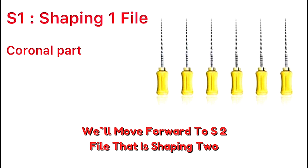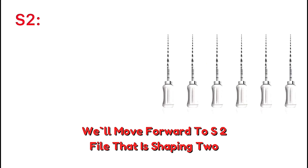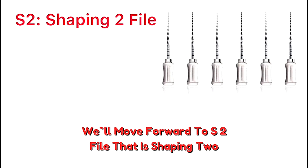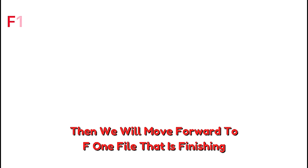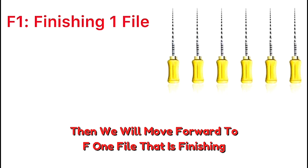We then move forward to the S2 file, that is Shaping Two, which is white in color and is used to prepare the middle third of the canal. After that we move forward to the F1 file, that is Finishing One, which is used to prepare the apical third of the canal.